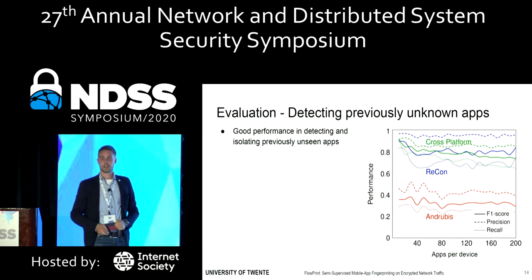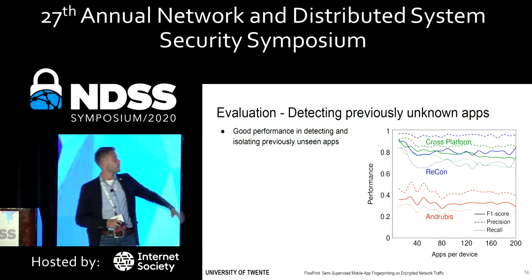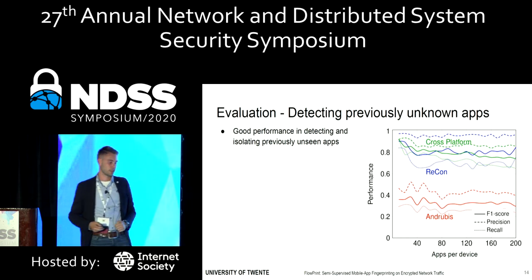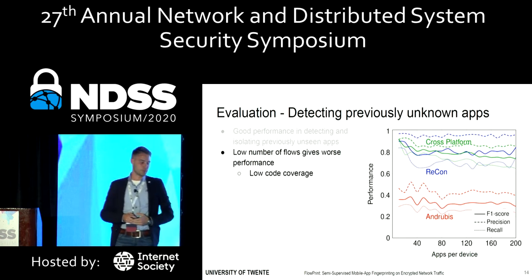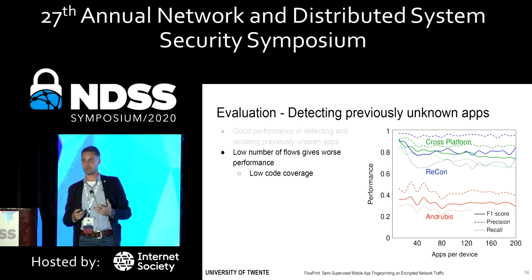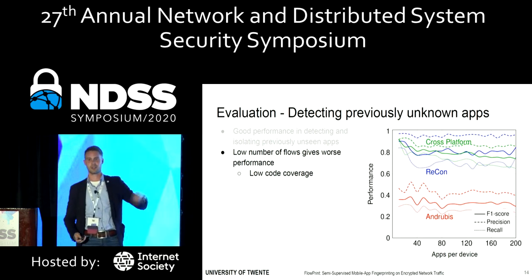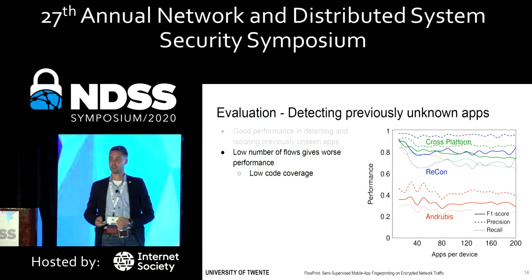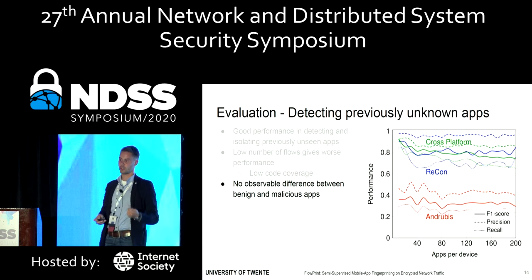Now let's look at detecting apps we haven't seen before in the network traffic. For the cross-platform and Recon datasets, we still achieve very high F1 scores, but for the Andrubis dataset, a little bit less. This is because the Andrubis dataset has a very limited amount of traffic being generated — a little bit of low code coverage — which makes it difficult to recognize applications later on. We found no discernible difference between the malicious and benign applications, so that didn't seem to be the cause of this difficulty.